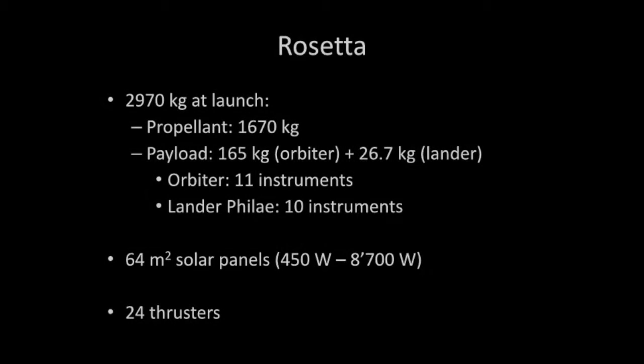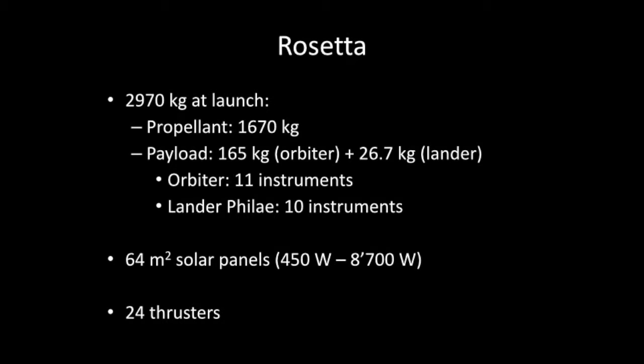Rosetta is a pretty heavy baby, 3,000 kilograms at launch, half of this weight is just the propellant and inside everything which is remaining, we have the payload, so the scientific instruments which we want to send in space and they represent only 165 kilograms for the orbiter and 26.7 kilograms for the lander. Altogether we have 21 instruments, 11 on the orbiter and 10 on the lander. I'm working on one of the 11 instruments from the orbiter. This is pretty important here, the solar panels, because Rosetta is the first probe to go so far away, almost next to Jupiter or near to the Jupiter orbit, with only solar panels. And we have 24 thrusters, so that it can go right, left, up, down, do some loopings and just have fun up there.